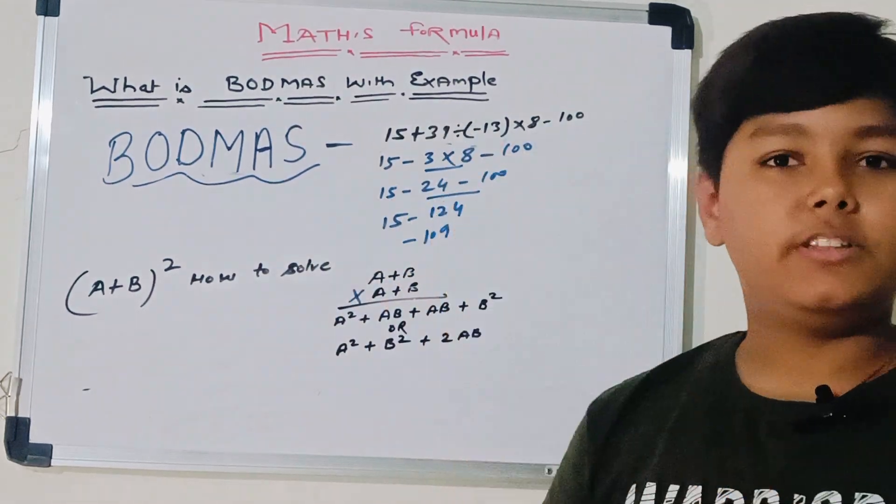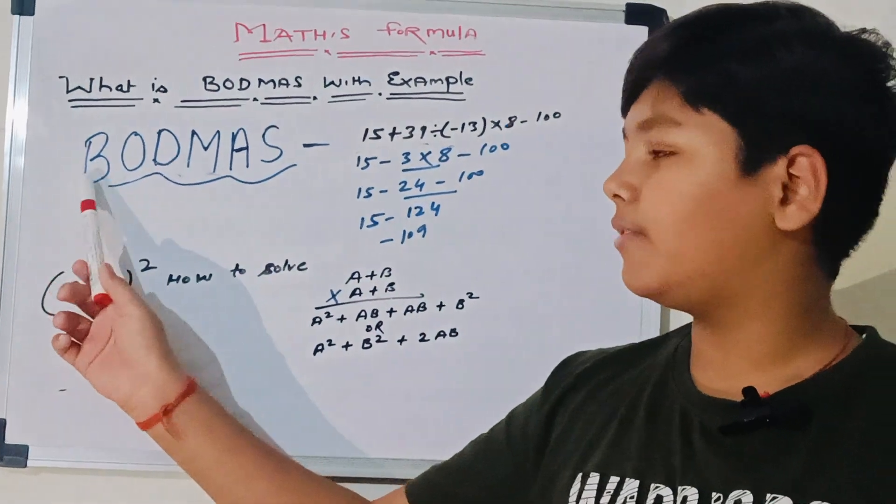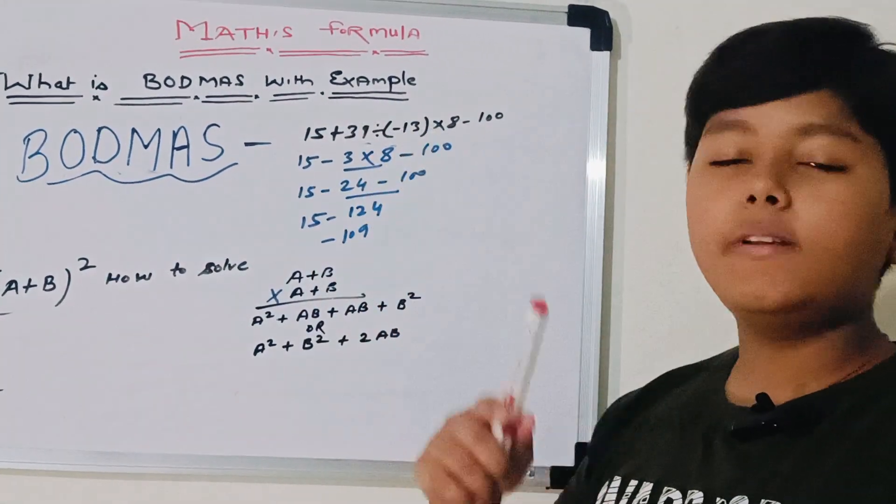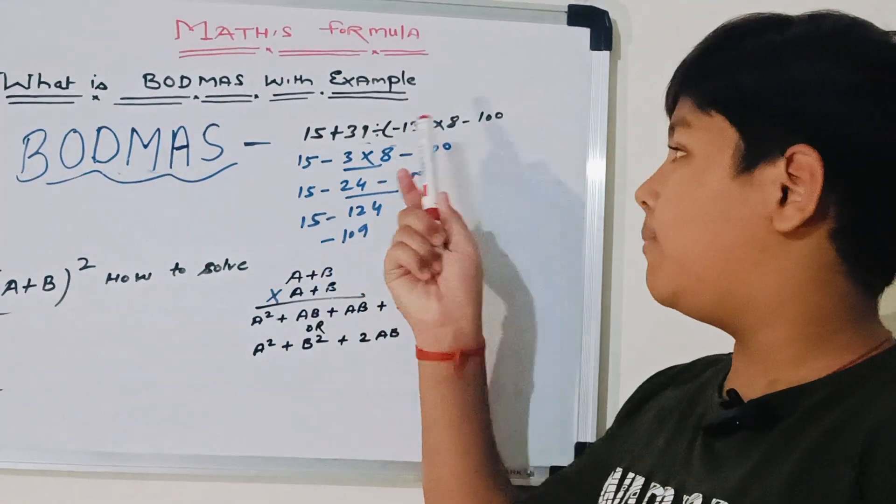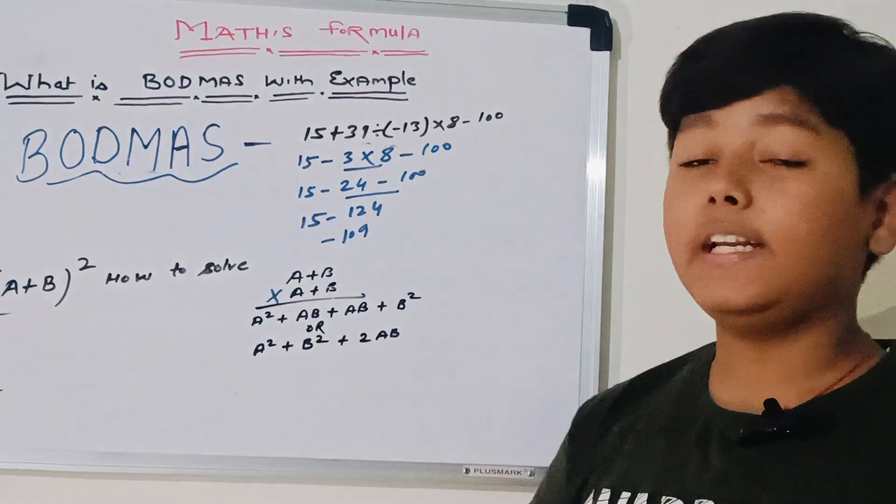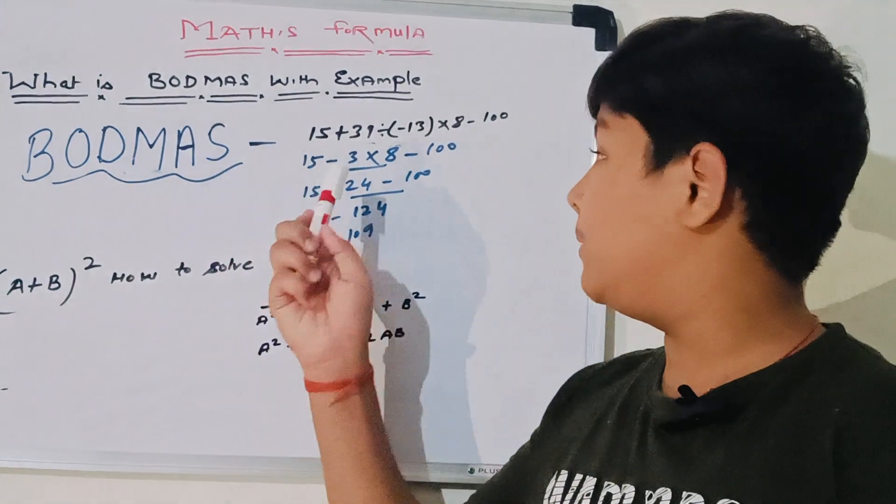So here is a bracket. As we know, we have to start with brackets. If we open the brackets, division and minus will come together. That should not come, so we will directly divide it. So the answer will be minus 3.